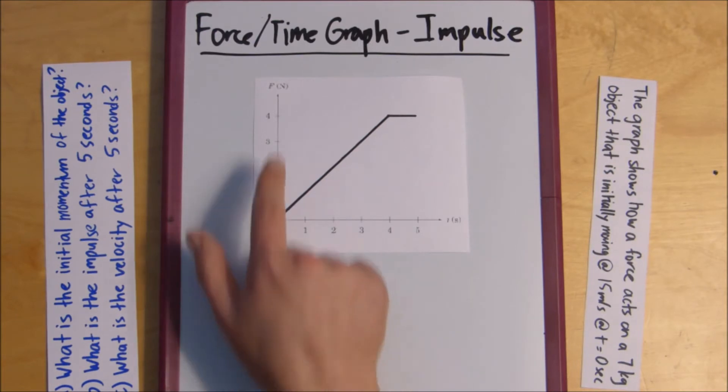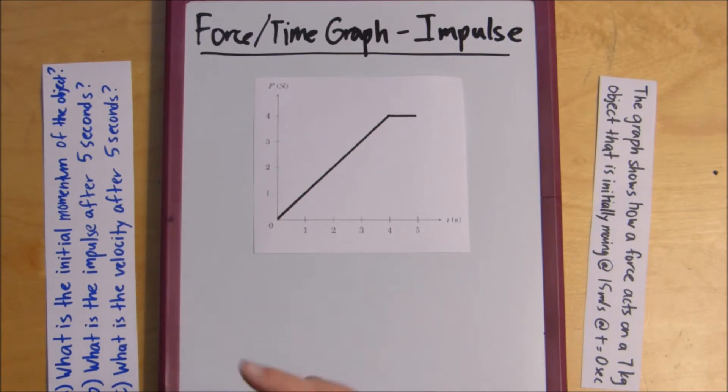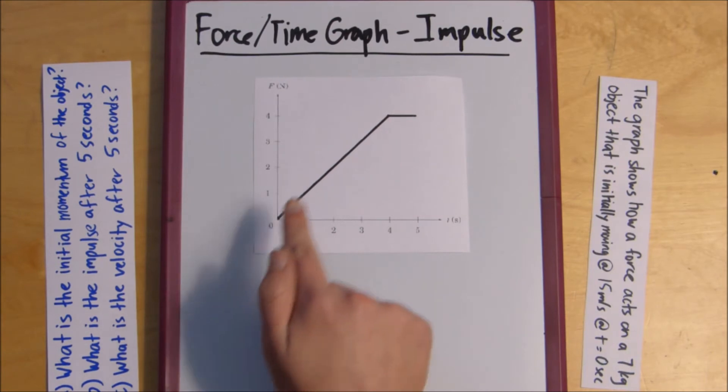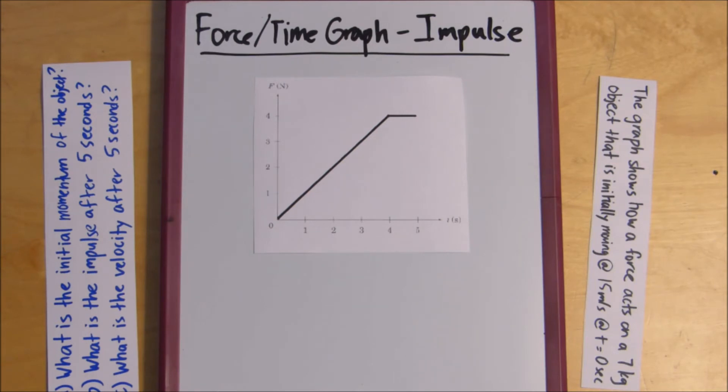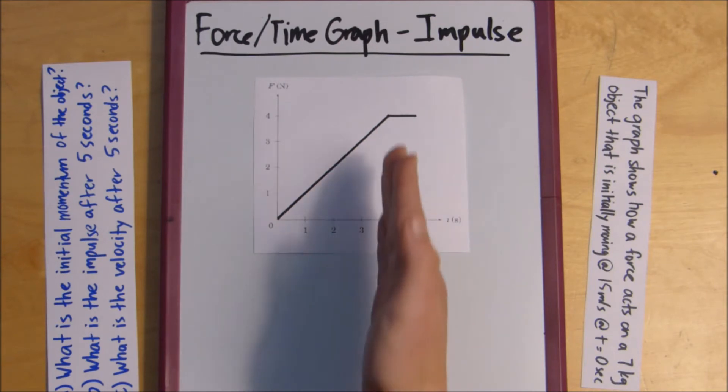So, what we have here is we have force and we have time. So, what we can do is we can find the area underneath the curve, and that will be our impulse. So, what we do is we draw some shapes.